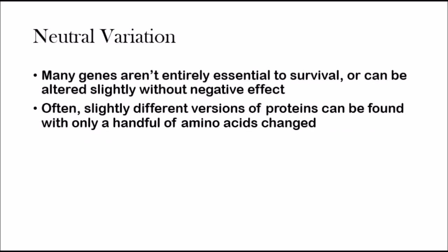There's also neutral variation, which also maintains genetic variation. Many genes aren't entirely essential to survival, or have an ultra-slight quality without negative effect. Often these slightly different versions of proteins can be found, with only a handful of amino acids changed. Sometimes you get a new gene which doesn't really do anything, and natural selection won't select for it. But later, if the environment changes, that gene can actually become useful. That's what neutral variation is.